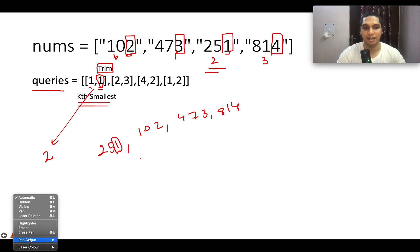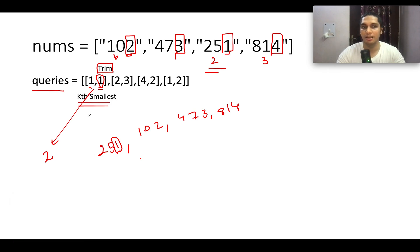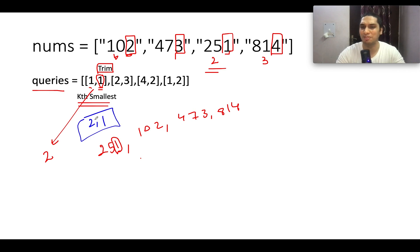This is the crux of the problem. Let's understand it with a few more examples. Had the query been (2, 1) — k=2 and trim=1 — we would still use the same sorted order based on the rightmost digit. The second element in that sorted order is 102, which occurs at index 0 in the original array. So the answer corresponding to that query would be 0.